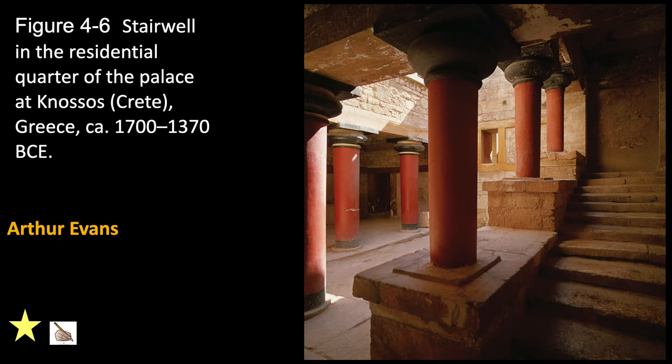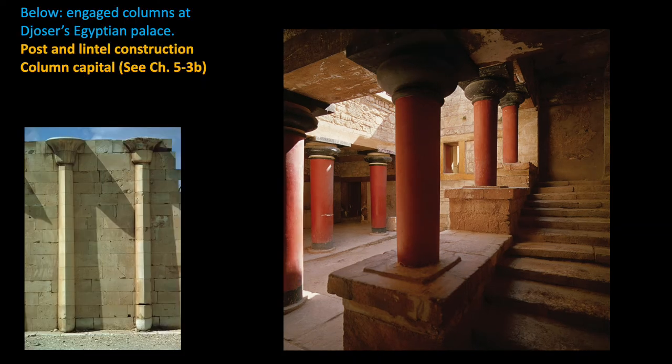Stairwell in the residential quarter of the palace at Knossos, Greece, 1700 to 1370 BCE. Here you see a restored version. The painted wood columns, restored in cement by Arthur Evans, have distinctive capitals and shafts. The Minoan columns taper from top to bottom — the opposite of Egyptian and Greek columns. We have already learned about the post-and-lintel construction method when we talked about Stonehenge, and here it is being used again.